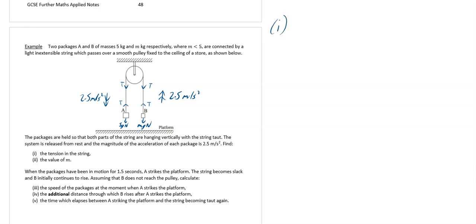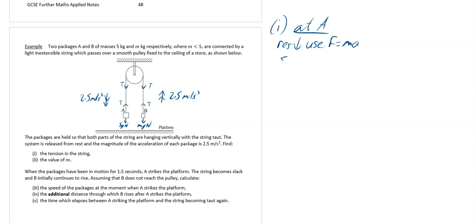For Part 1, finding the tension: consider package A alone, resolving downwards using F equals MA. The net force is 5G minus T equals 5 times 2.5. So T equals 5G minus 12.5, which is 50 minus 12.5, giving T equals 37.5 Newtons.